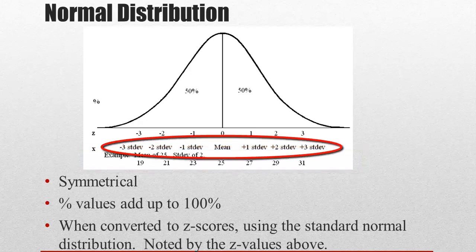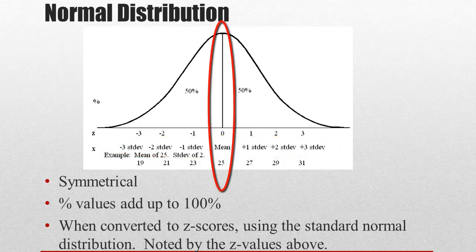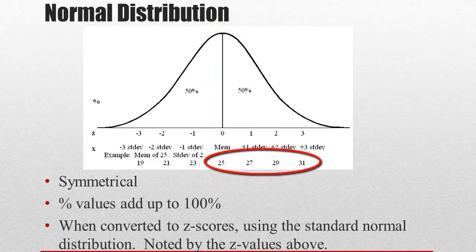So the mean and the standard deviation define this. Our mean is 25, if you look at the very score on the bottom there. And then we're going to go up by multiples of 2. So we're going to take that standard deviation of 2, and we're going to add 25 plus 2 is 27, plus 2 is 29, plus 2 is 31.